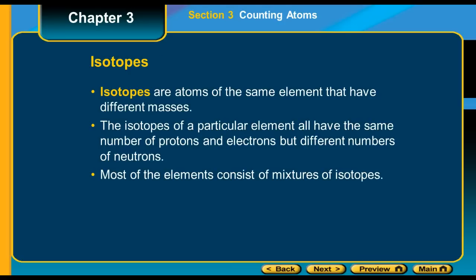Isotopes are when you have an atom of the same element that has a different mass, and this happens because you have a different number of neutrons. So protons can't change because if you change the protons you have a different element, but if you have a different number of neutrons in your substance, then you have what's called an isotope. And isotopes will have a different mass because they have different numbers of neutrons. Most of the elements consist of mixtures of isotopes, and that leads you to an average atomic mass, which we'll get into in a later screencast.